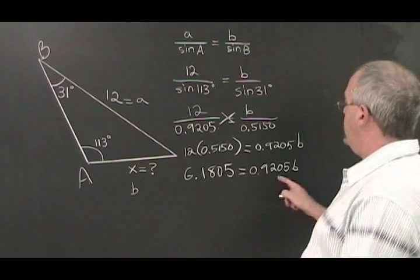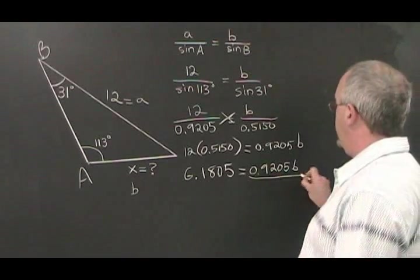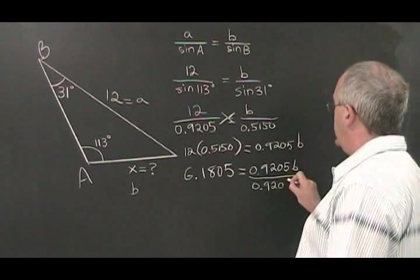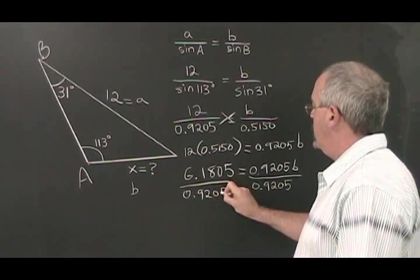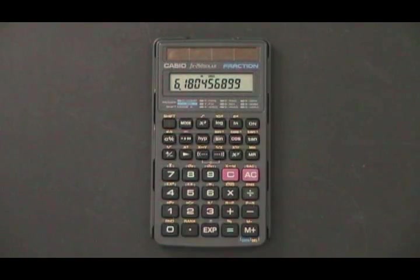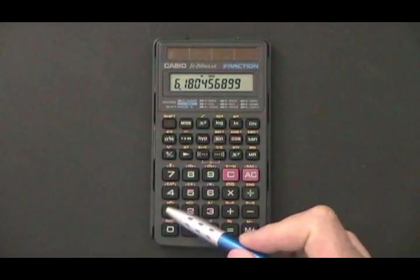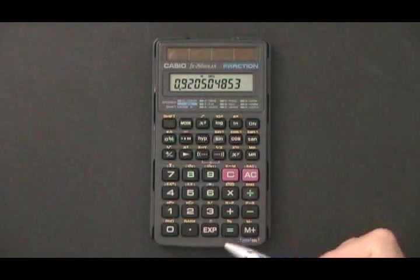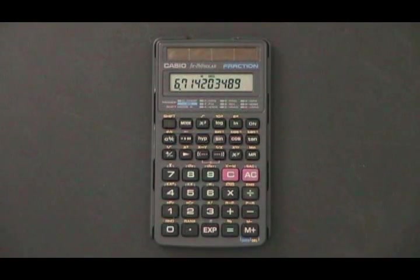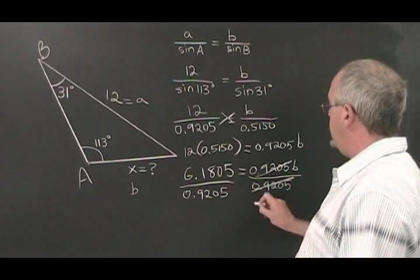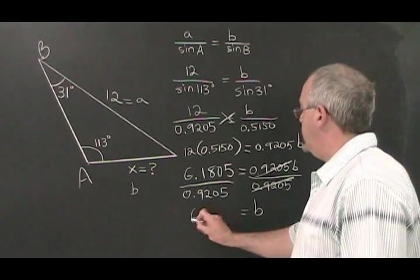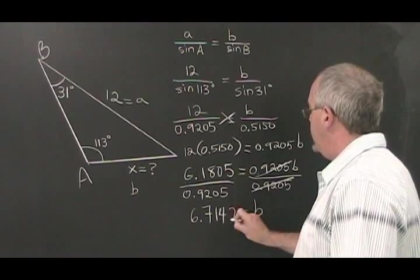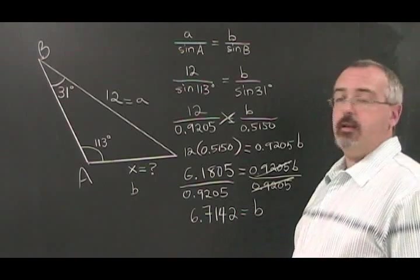Since our variable B is being multiplied by 0.9205, we divide both sides by 0.9205 in order to cancel it out. 6.1805 divided by the sine of 113 degrees is equal to 6.7142. These two numbers cancel out and our B is equal to 6.7142. And we have found the length of our missing side B.